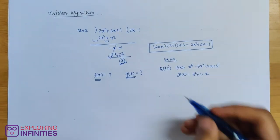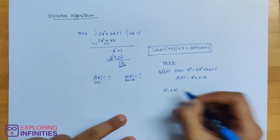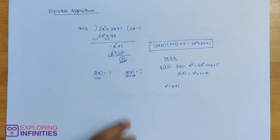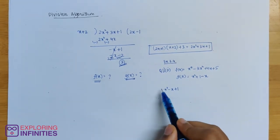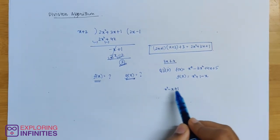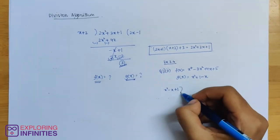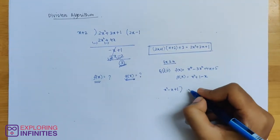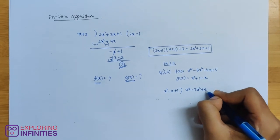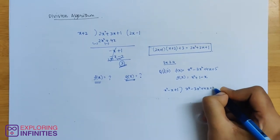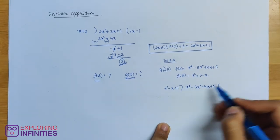From exercise 3.4, first question second part: f of x is equal to x power 4 minus 3x square plus 4x plus 5. G of x is equal to x square minus x plus 1. We divide f of x by g of x. An important tip: always write terms in descending order of powers, with the constant last, to make long division easy.